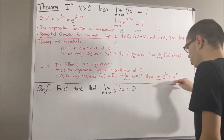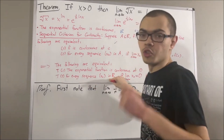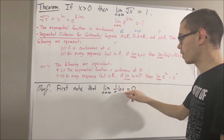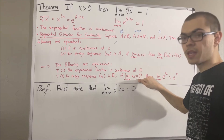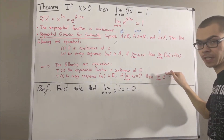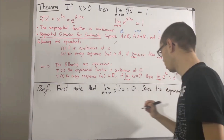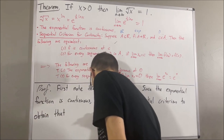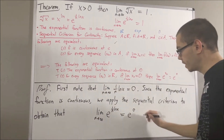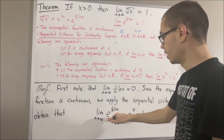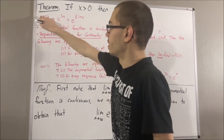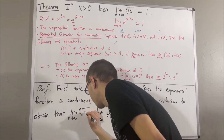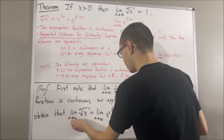And so because statement 2 is true, we know that this works for every sequence of real numbers. So in particular, it must work for the sequence 1 over n times natural log of x. We know that 1 over n times natural log of x converges to 0. Therefore, e to the (1 over n) natural log of x converges to e to the 0, which is equal to 1. And we know that e to the (1 over n) natural log of x is the same thing as the n-th root of x, so this must equal the limit as n approaches infinity of the n-th root of x. Thus, the limit of the n-th root of x is equal to 1.